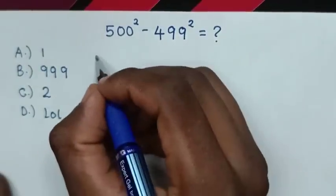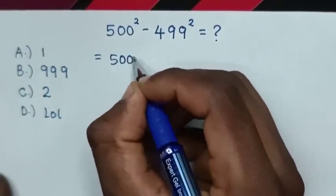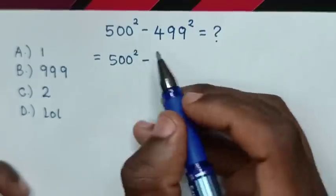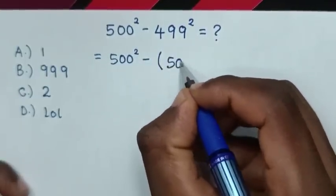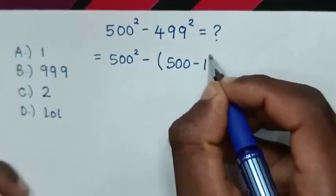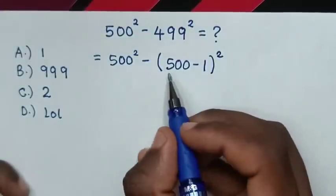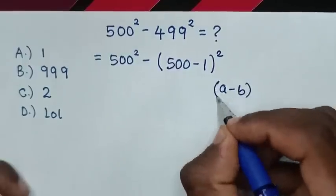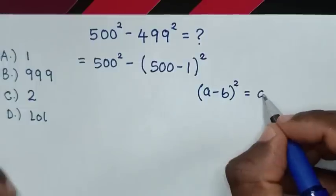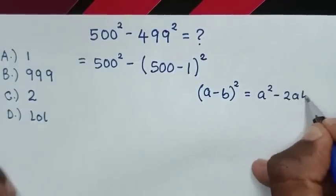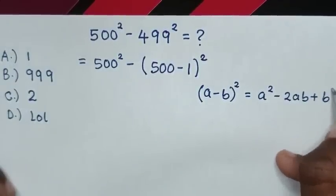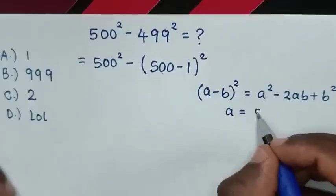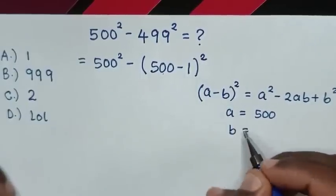So from this expression, it is equal to 500 square minus 499. To have common 500, this is the same as bracket 500 minus 1, bracket square. This is in the form of A minus B bracket square, which is equal to A square minus 2AB plus B square, where A is equal to 500 and B is equal to 1.